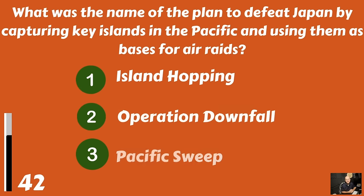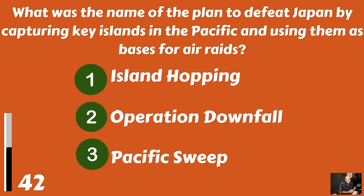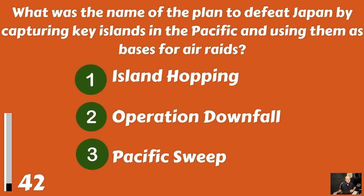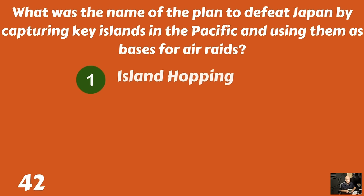What was the name of the plan to defeat Japan by capturing key islands in the Pacific and using them as bases for air raids? Island Hopping? Operation Downfall? Or Pacific Sweep? And that would be Island Hopping.